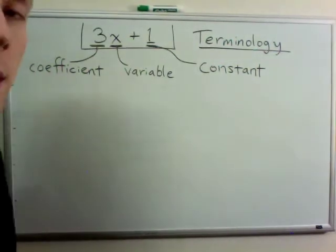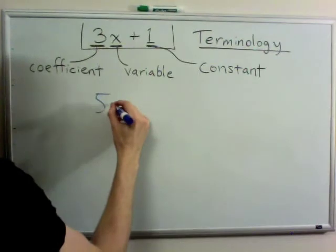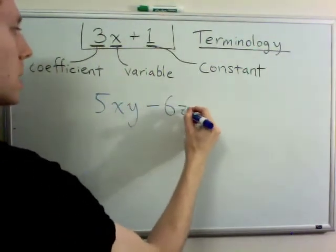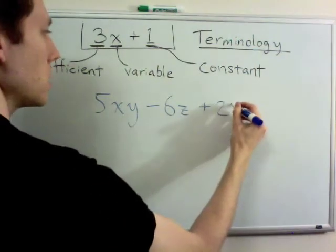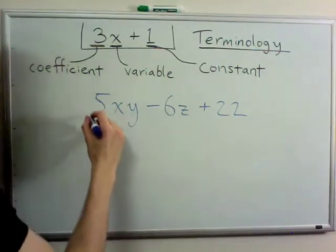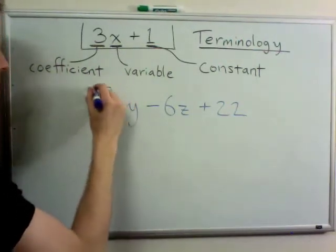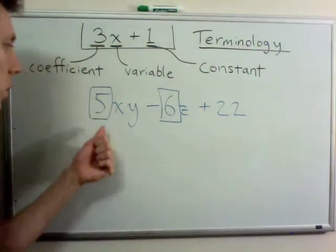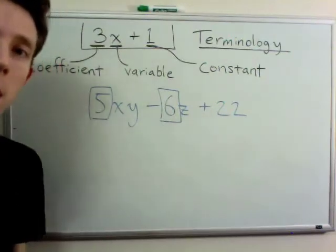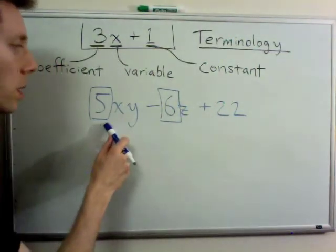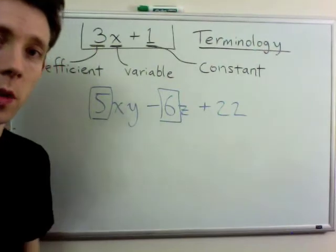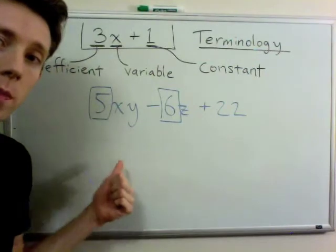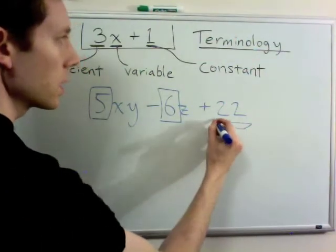As another quick example, let's say I have the expression 5 times x times y, minus 6 times z, plus 22. This time 5 is a coefficient, and 6 is also a coefficient of z. Looking at each of the three terms, the numbers multiplied by a variable or set of variables are the coefficients. Here x and y are two variables, but just the 5 is the coefficient. And 22 is the constant term.